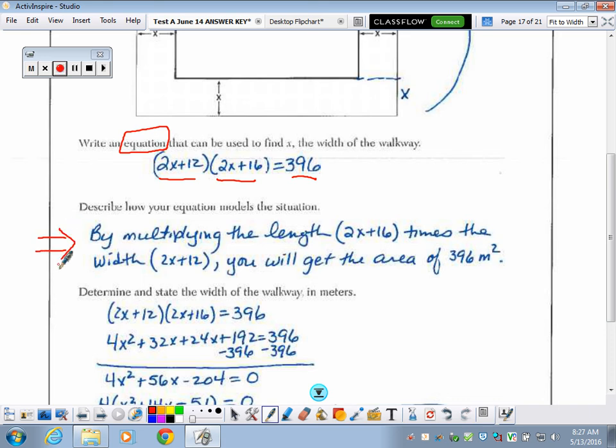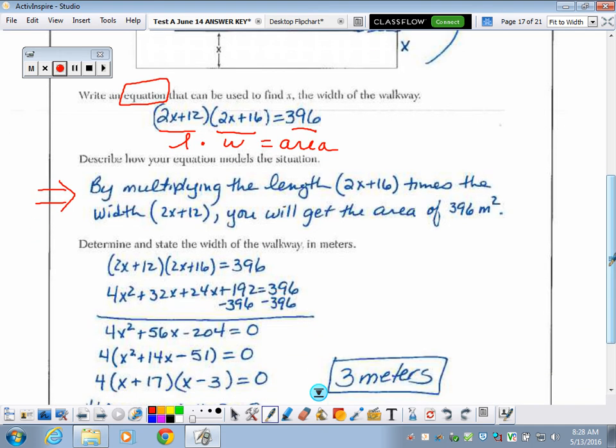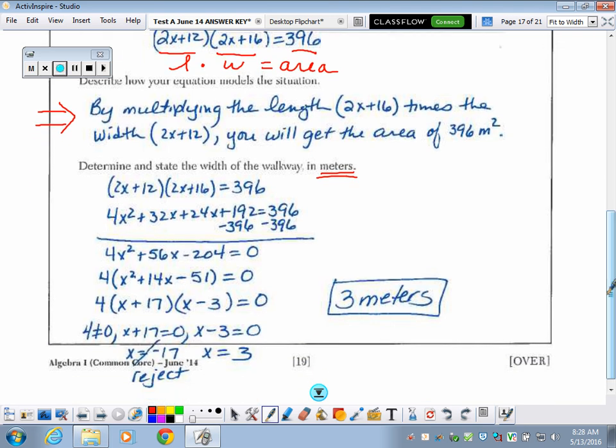Describe it. Oh, God, guys, we did a couple of these and these were not that good. All you have to do is describe what you wrote. Why did you write this equation? Because you knew that the length times the width equaled the area. Very, very simple. You do not want to lose points for that. Down at the end, determine and state the width of the walkway in meters. So, of course, you're going to label it in meters.